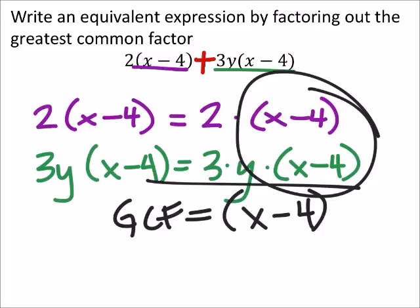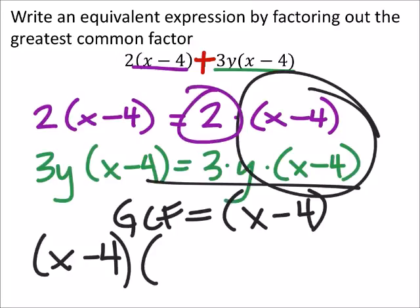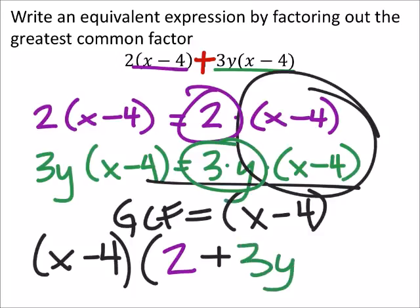So outside of the parentheses, I've got an x minus 4, and I'm going to multiply it by what's left. In purple, which was the leading term, I've got a 2 left over, and this was added to what's left over from that second term is the 3y. That's it.